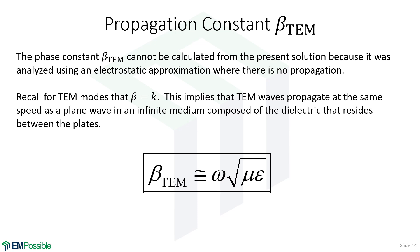Let's think about the propagation constant. For TEM modes, the phase constant and wave number are the same. This leads to the cutoff frequency being zero, and tells us the speed of the wave in the transmission line equals the speed of a wave in the dielectric alone. So TEM waves propagate at the same speed as a plane wave in the medium. That lets us set the phase constant beta equal to omega times the square root of mu epsilon.